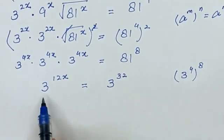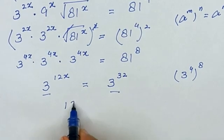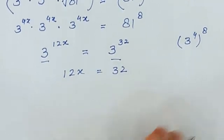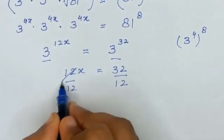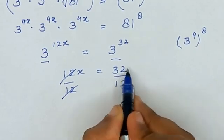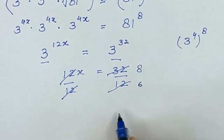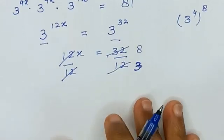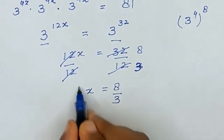You can see that the bases are the same, so we can equate the powers: 12x is equal to 32. To find the value of x, we divide both sides by 12; 12 and 12 cancel out, giving 32 divided by 12, which simplifies to 8 divided by 3. So the value of x is equal to 8 divided by 3.